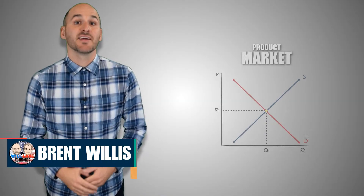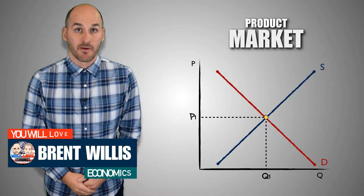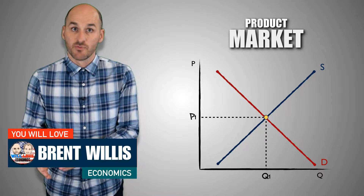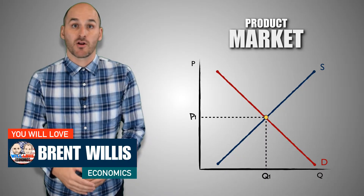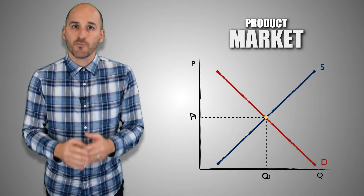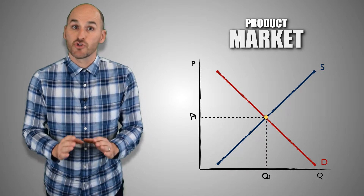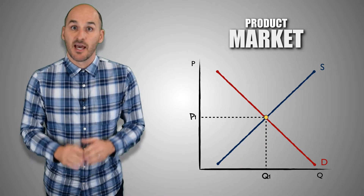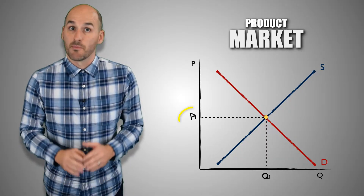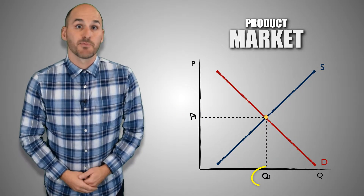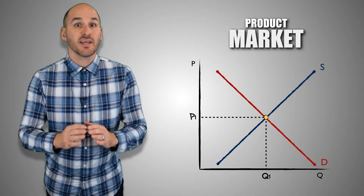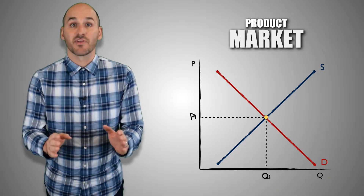Everyone benefits when a market is at equilibrium. Through voluntary exchange, consumers and firms interact in the product market and eventually reach an agreement where both participants mutually benefit in the marketplace as utility and profits are maximized. Prices are optimal, the quantity supplied equals the quantity demanded, and the market is allocatively efficient.